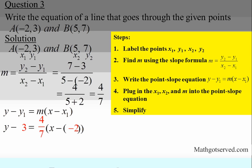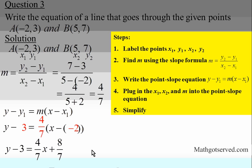Step five: simplify. We distribute four over seven into the quantities on the right. Remember, negative times negative two gives positive. That yields y minus three equals four over seven x plus eight over seven. Multiply four over seven by two — write two over one and multiply horizontally to get eight over seven. This is the point-slope form of the equation of the line through these points.